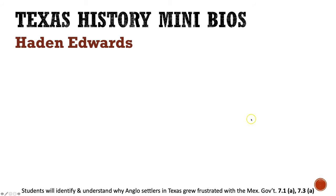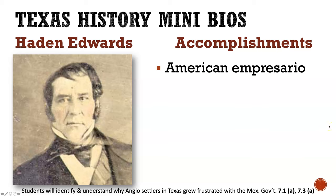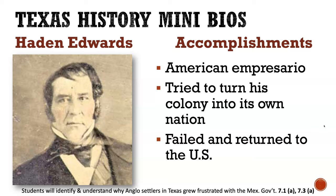Our only mini bio in this presentation is a man named Hayden Edwards. Hayden Edwards was an American impresario who came to Texas with the goal of bringing settlers, settling a large piece of land, making money, and becoming a landowner. The problem is he tried to turn his colony into its own nation. He got angry at the Mexican government and said he'd take his land and make it into a separate country. Unfortunately for Edwards, he failed and was forced to return to the United States. We'll get into more detail about his rebellion in just a moment.